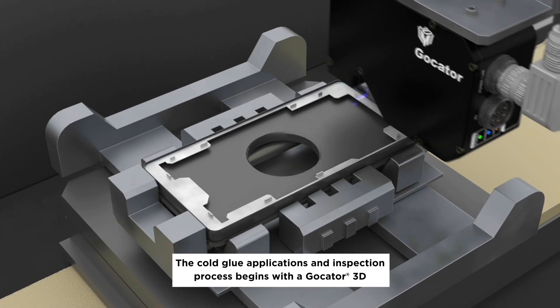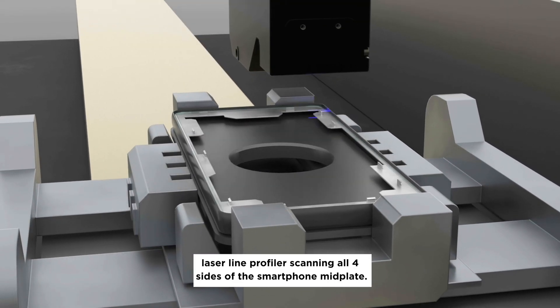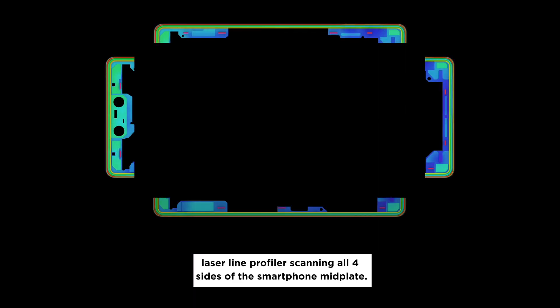The cold glue applications and inspection process begins with a Gocator 3D Laser Line Profiler scanning all four sides of the smartphone midplate.